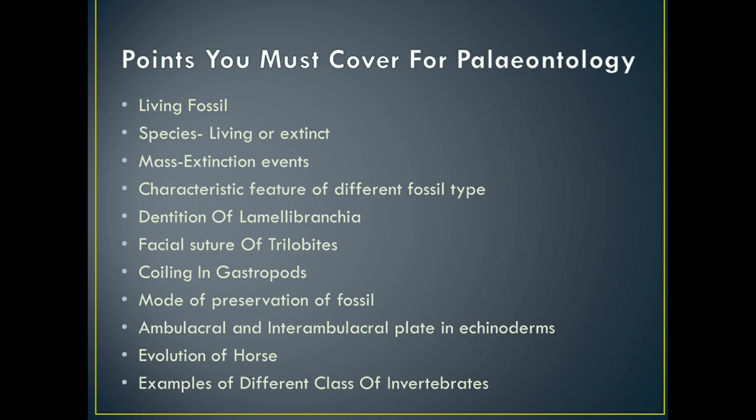The next part is Species — Living or Extinct. Sometimes you need to differentiate between species which are living and species which are extinct. So whenever you are studying each species of that class or phylum, keep an eye on the range of time period through which it has existed. Next is the Mass Extinction Events. We have 5 major mass extinction events recorded in Earth history. You need to mark the time period of the mass extinction, the cause of the mass extinction, and the species which became extinct. You have to remember all these points.